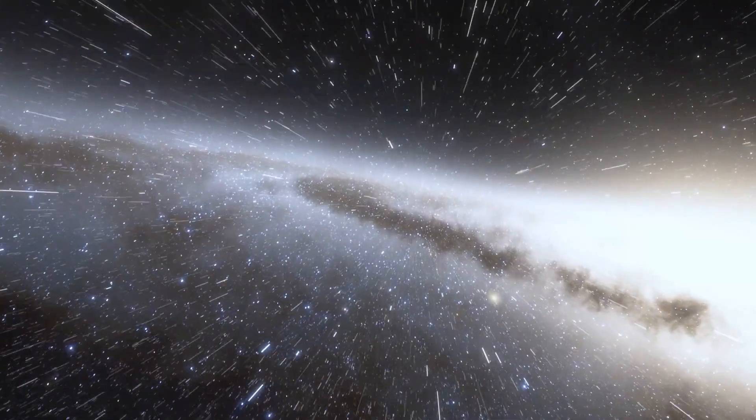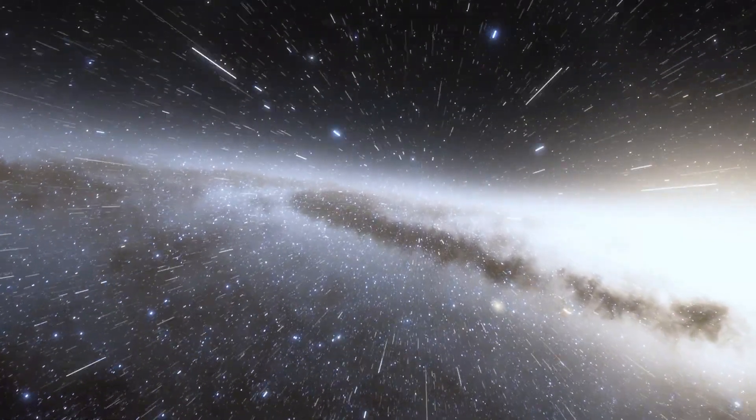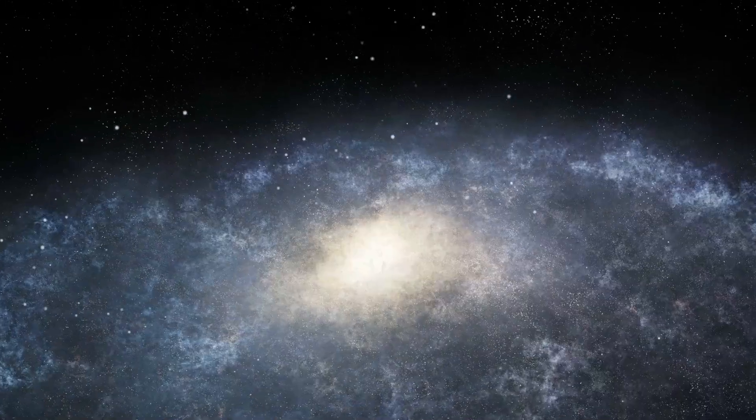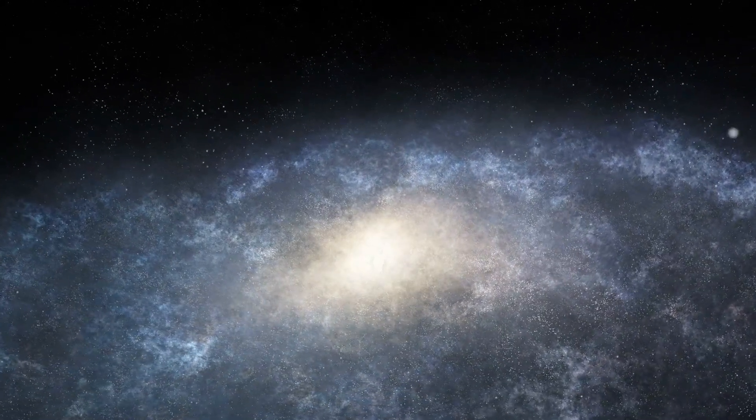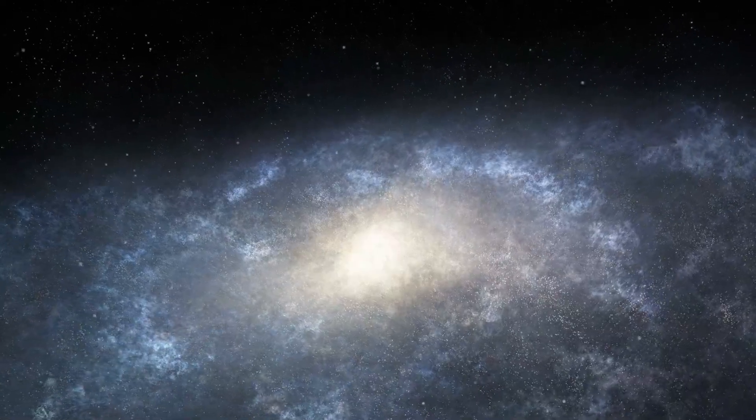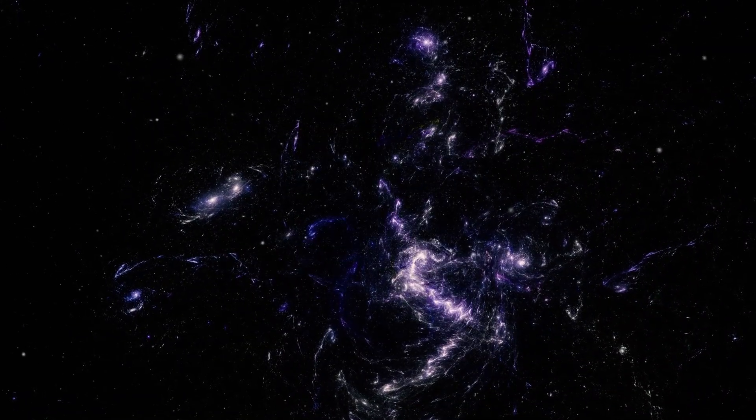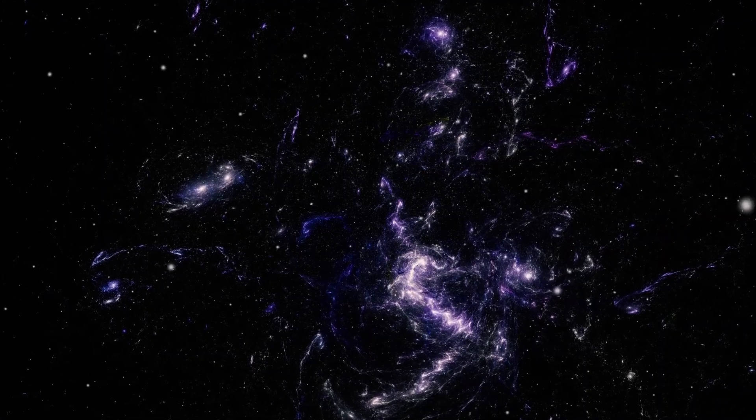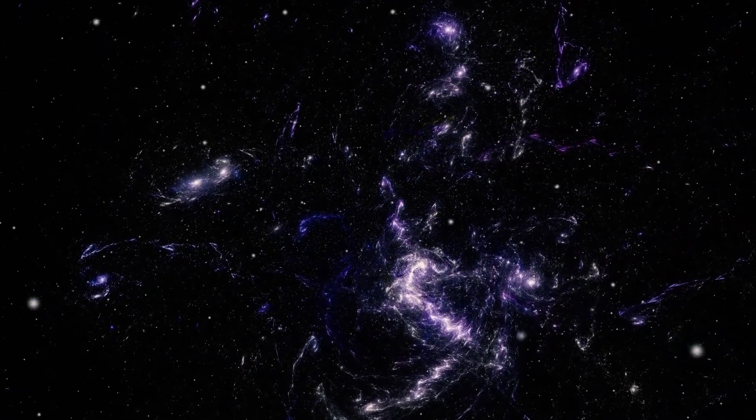Let's focus on the Boötes superclusters. These superclusters are famous for their proximity to the Boötes void, one of the most remarkable voids in the cosmos, discovered in 1981. Located about 700 million light-years from us, this void has a diameter of approximately 300 million light-years.